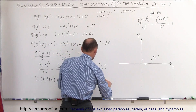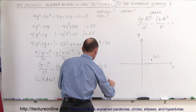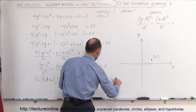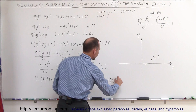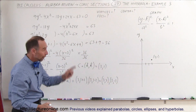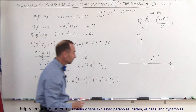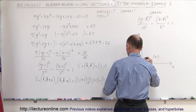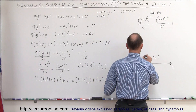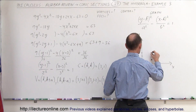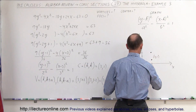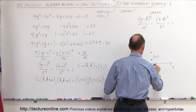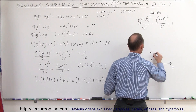So the two vertices are: x equals 3, y equals 1 plus 2 equals 3, giving the point (3, 3); and x equals 3, y equals 1 minus 2 equals negative 1, giving the point (3, negative 1). These lie on the vertical axis going right through the center. That point is (3, 3) and this one is (3, negative 1).